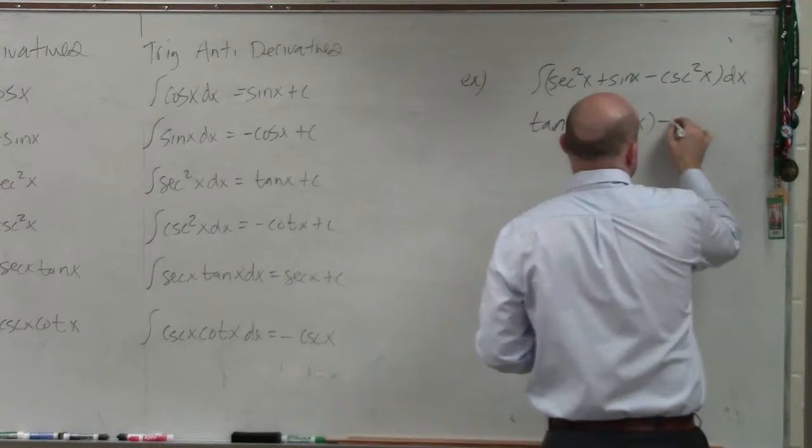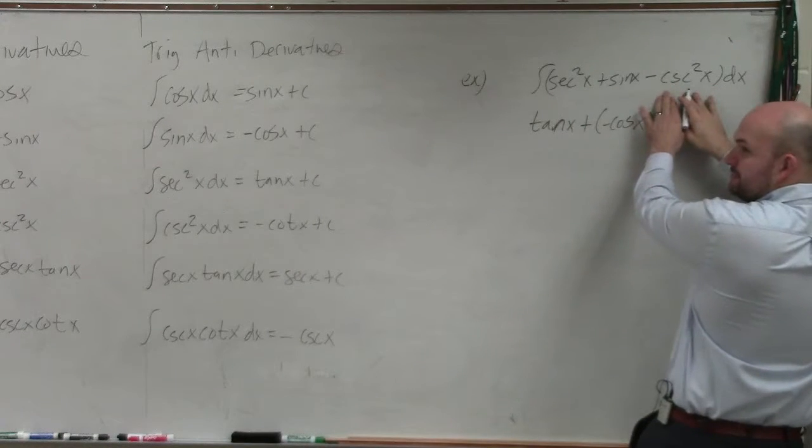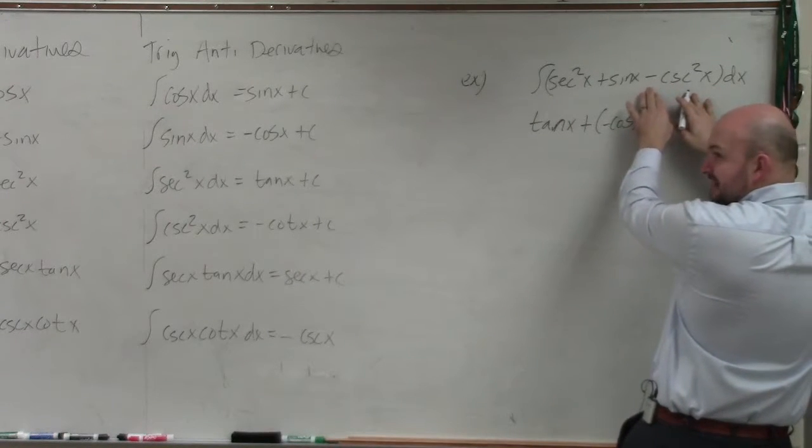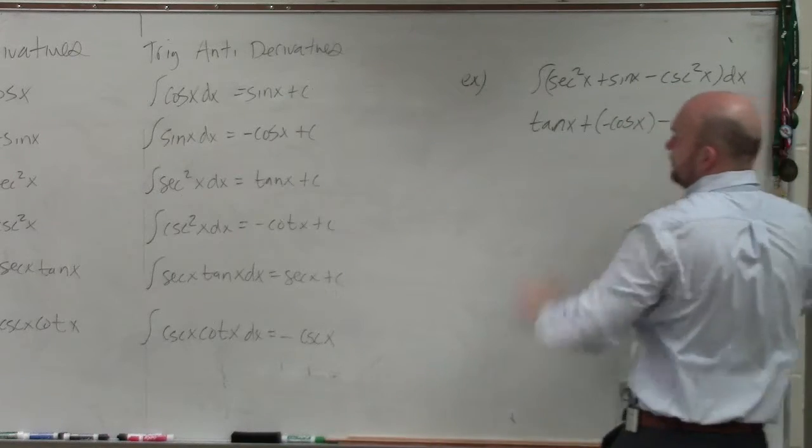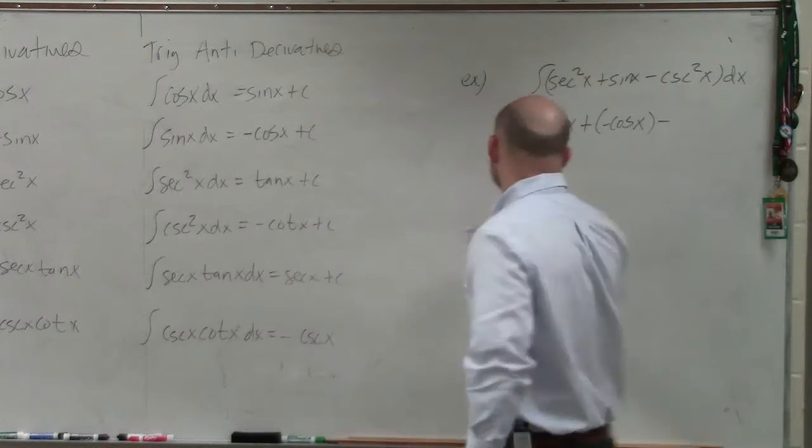I think sometimes this gets confusing sometimes, people. Just take the antiderivative of cosecant squared. Don't worry about the antiderivative of negative. Just do cosecant squared. Cosecant squared is negative cotangent.